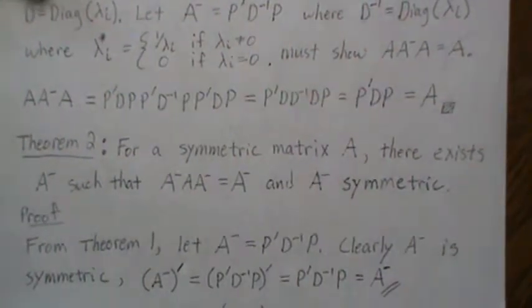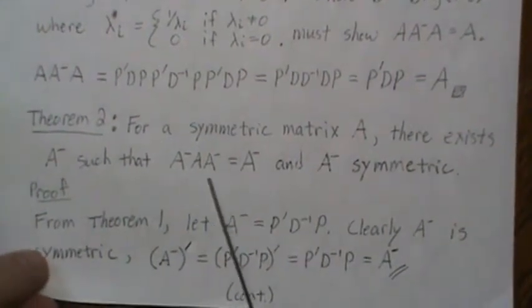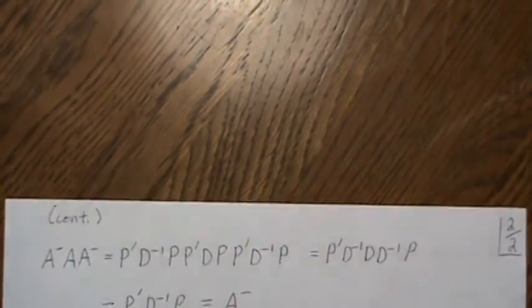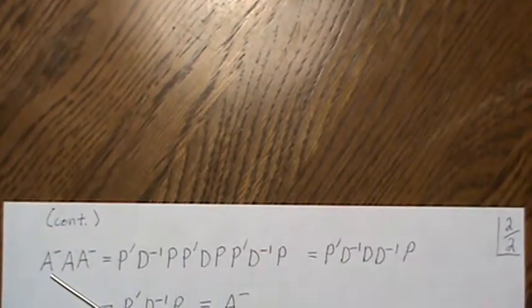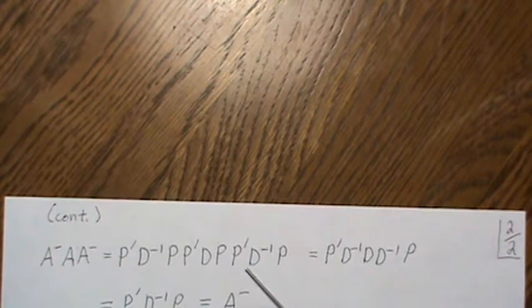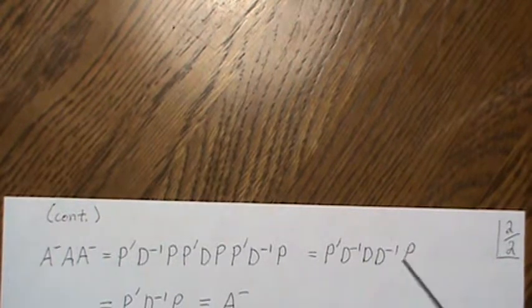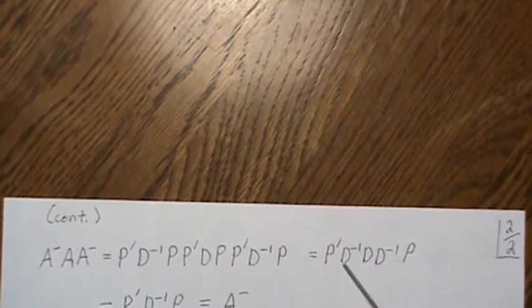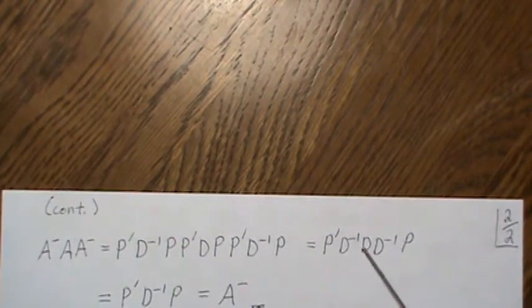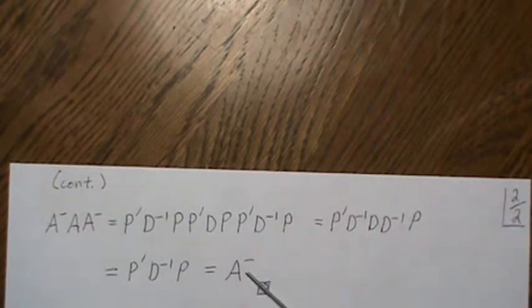Now let's prove the reflexive property A-dash A A-dash = A-dash. We plug in the spectral forms for A-dash, A, and A-dash. Since P is orthonormal, PP' equals the identity, and D-inverse D equals the identity, and D D-inverse equals the identity. We're left with P' D-inverse P, which is exactly what we were calling A-dash. So the reflexive property holds.